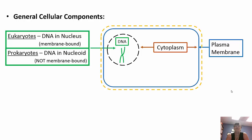All cells have three general components: the plasma membrane, cytoplasm, and DNA. In eukaryotic organisms, the DNA is inside a membrane-bound nucleus — eukaryotes have a true nucleus. Prokaryotic organisms do not have a true nucleus; their DNA is found in the nucleoid region. The three features common to all cells are DNA, cytoplasm, and the plasma membrane, though DNA is located in different areas between prokaryotes and eukaryotes.